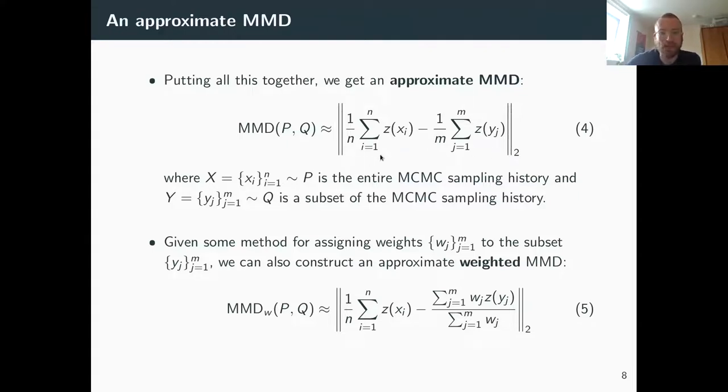And then for this one we need to evaluate for all our candidate subsamples. So that's our approximate MMD. And then we had another idea that if we could assign weights at the same time as we pick the samples, then we could get a weighted MMD. That would allow us to take basically fewer samples from high density areas of the posterior and get more samples from the tails without reducing its kind of representative power, this subset of samples.